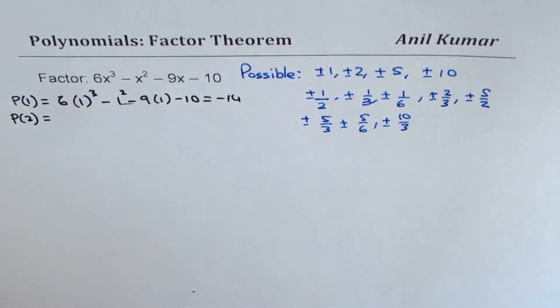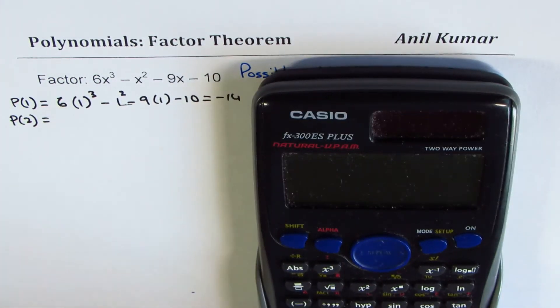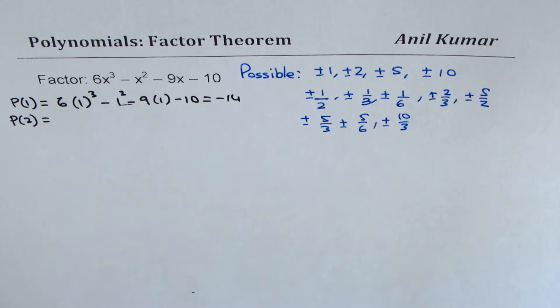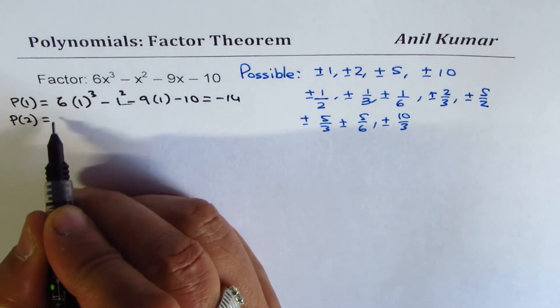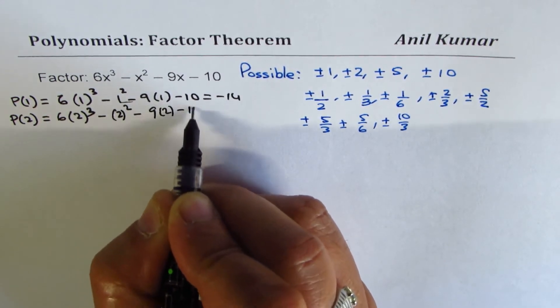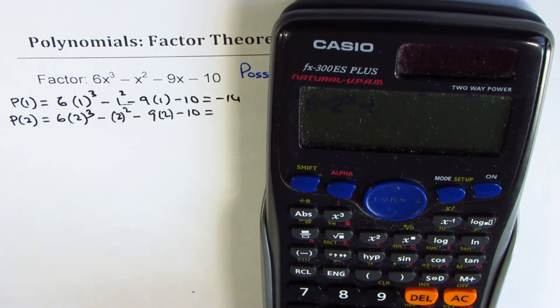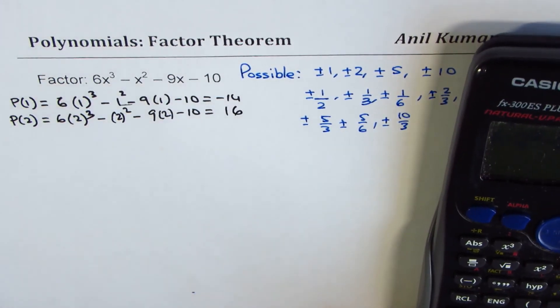Let's now plug in 2 and find the answer. Now onwards, what we are going to do is we'll just plug in the numbers and calculate the result. So let's calculate for 2 now. That is 6(2)³ - (2)² - 9(2) - 10 equals what? So we have the answer +16.